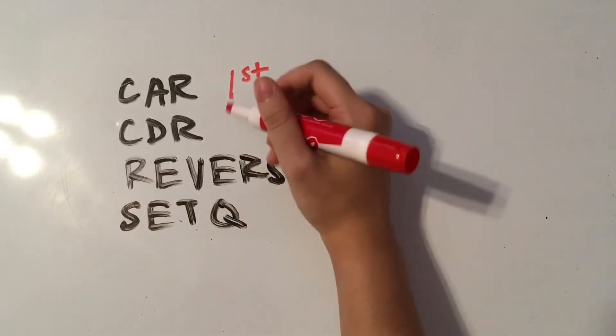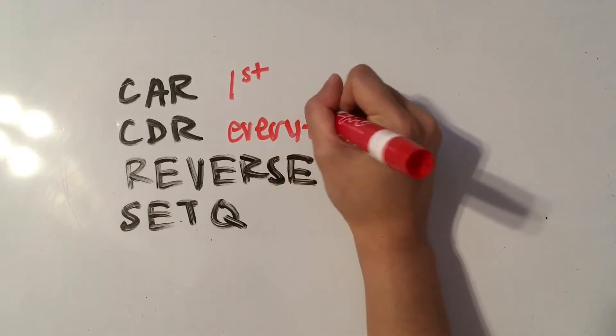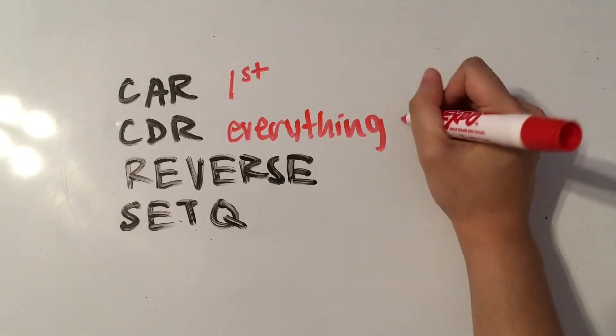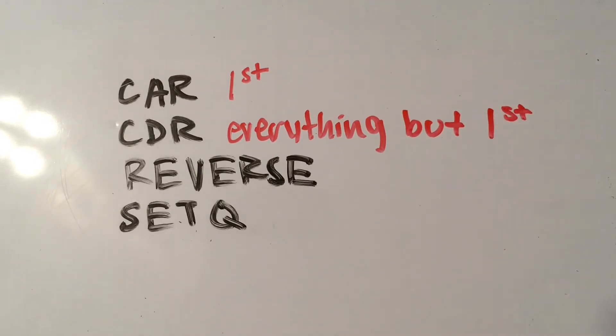So, CDR takes everything but the first. I like to pronounce this cutter because I think of it cutting off the first one. It takes everything but the first item in that list.